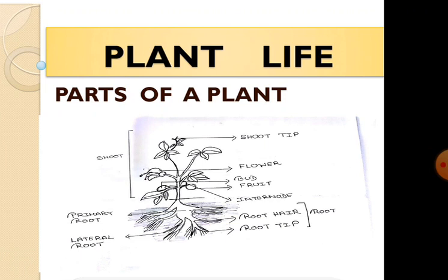The part which is above the ground is called the shoot, and that consists of stems, leaves, buds, flowers, and fruits. The part which is below the ground is called the root, and it comes under the root system.